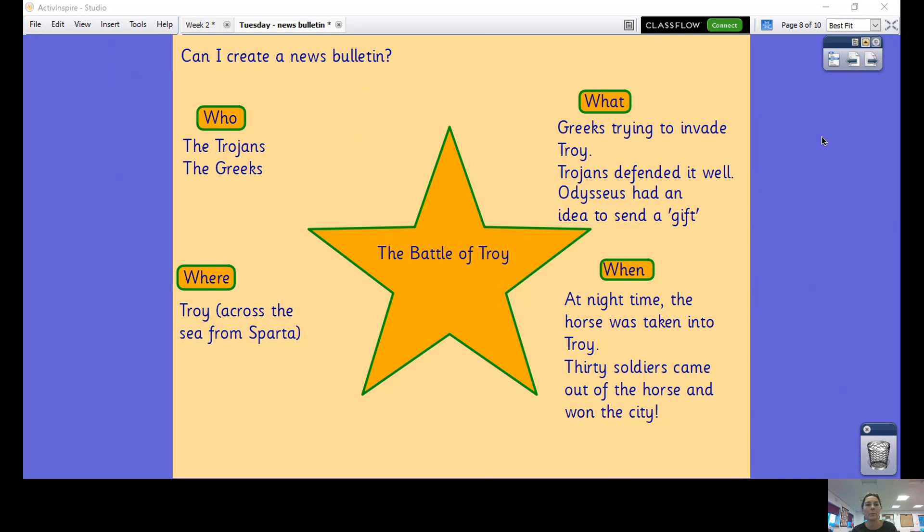The who, what, where and when. The who: we've got the Trojans inside their walls in Troy and then we've got the Greeks who are fighting against them. It happened at Troy, which was across the sea from Sparta. The Greeks had been trying and trying to invade Troy, this war had been going on for years, but the Trojans really defended it well. So Odysseus the war general had this idea to send this wooden horse as a gift. At night time the horse was taken into Troy, the soldiers came out, they signaled back to the boats, and eventually they defeated the Trojans.